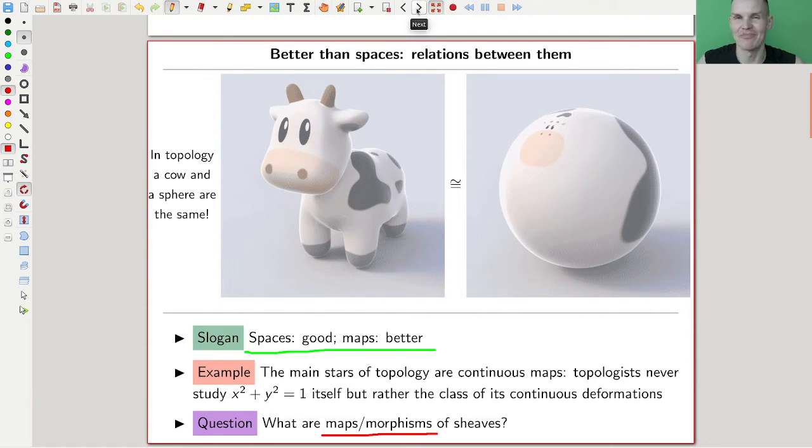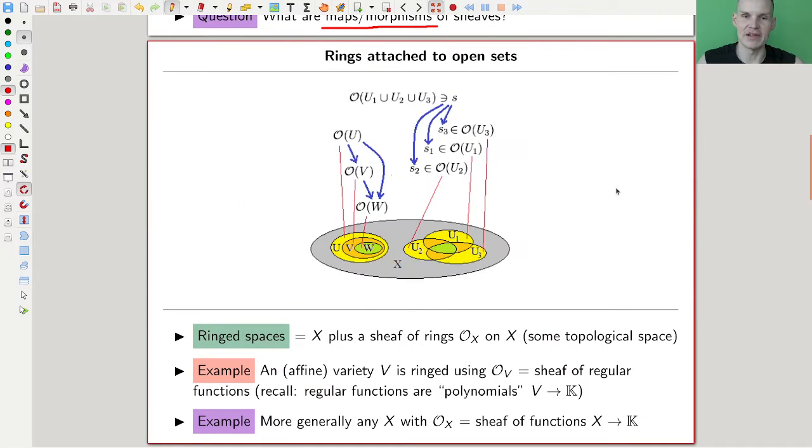So here's the definition, the definition of a ringed space. Rings attached to open sets. So ringed just really means rings, as algebraic geometry likes rings, remember, rings attached to open sets. We want rings. And how do we do that? Well, we just consider a space itself, but also some sheaf on it, some sheaf of rings, and that's what we call a ringed space. And it's completely general, it works for a topological space, and you just have some sheaf of rings.